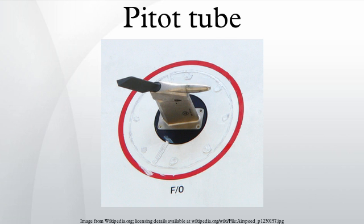Pitot tubes on aircraft commonly have heating elements called Pitot heat to prevent the tube from becoming clogged with ice. The failure of these systems can have catastrophic consequences, as in the case of Austral Líneas Aéreas Flight 2553, Birgenair Flight 301, Northwest Airlines Flight 6231, Aeroperú Flight 603, and AVENSA Flight 631. The French Air Safety Authority BEA said that Pitot tube icing was a contributing factor in the crash of Air France Flight 447 into the Atlantic Ocean.